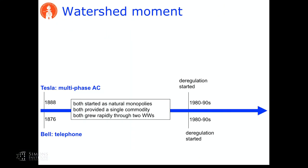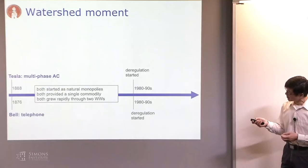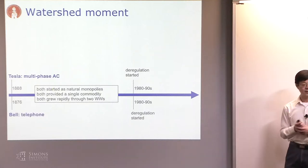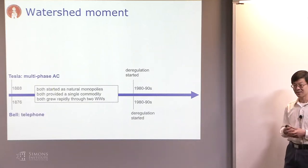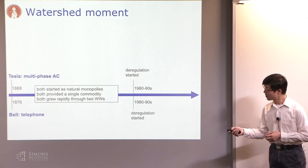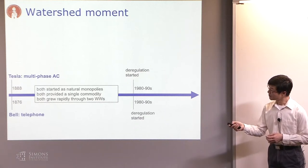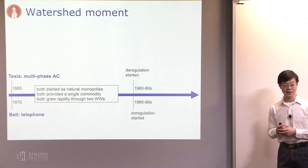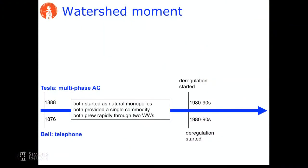Why smart grid? We're really at a watershed moment. If we look at the largest man-made artifacts, perhaps the communication network — at least the modern communication network, the telephone network — and the AC transmission power network both started around the same time, about 140 years ago. Both started in a very similar engineering, market, and regulatory structure to provide a single commodity extremely reliably. Reliability is the most important criteria in how we design and operate a network.